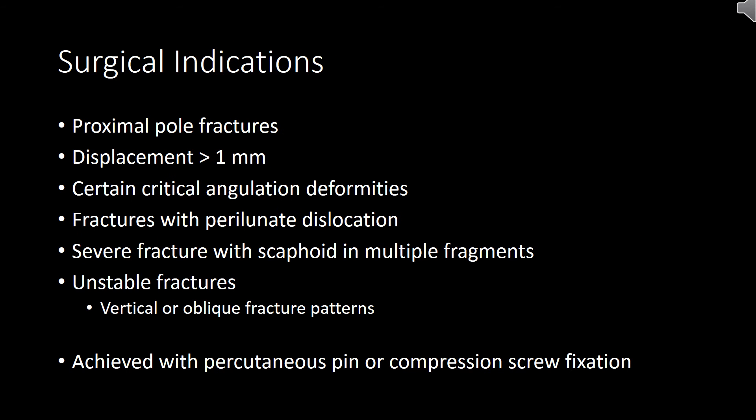The surgical indications for a scaphoid fracture are many. Proximal pole scaphoid fractures are more likely to need surgery. Any scaphoid fracture with greater than 1 mm of displacement usually requires surgery. Certain critical angulation deformities, fractures where there is a dislocation around the lunate (a neighboring bone), fractures where the scaphoid is in multiple fragments, and any fracture that is unstable with a vertical or oblique fracture pattern all require surgical intervention.